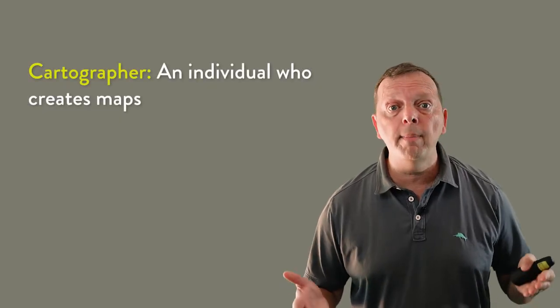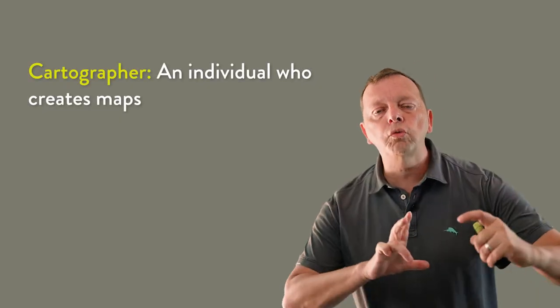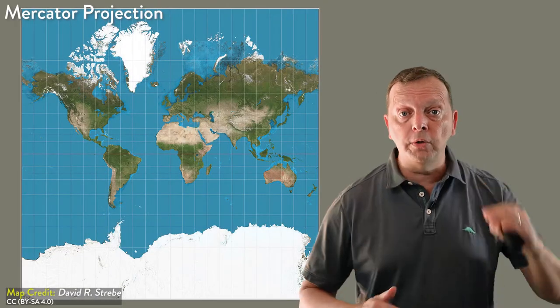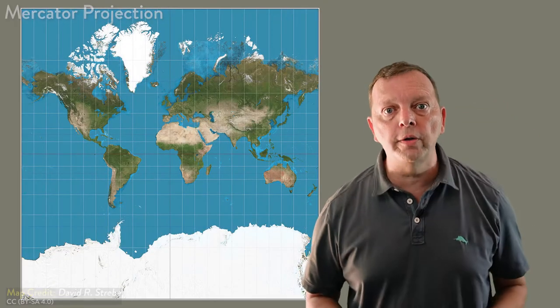So cartographers, these are people who make maps, have worked to be able to stretch the landforms so they can maintain the accurate distances and directions of the oceans. Usually projections such as Mercator will make the landforms near the poles appear much larger than they really are.